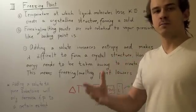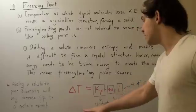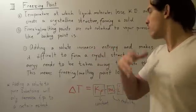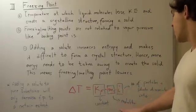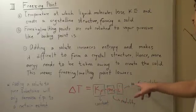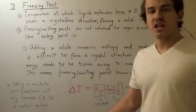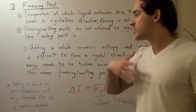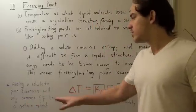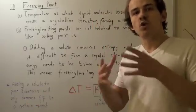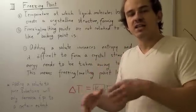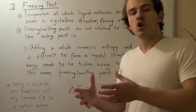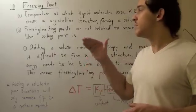The amount by which the freezing and melting point lowers can be found by a similar formula: the change in temperature equals a constant Kf — which depends on the substance being melted or frozen — times the molality of the substance, times i, the number of particles a solute dissociates into. We must be careful, however, because adding a solute will only decrease the freezing point to a certain extent. Eventually, if we add enough solute, the amount of solute will surpass the amount of solvent, and adding any more solute will actually cause the freezing point and melting point to rise.